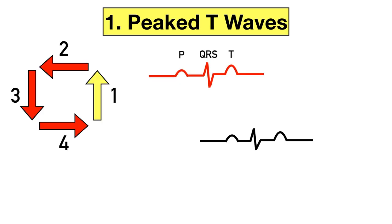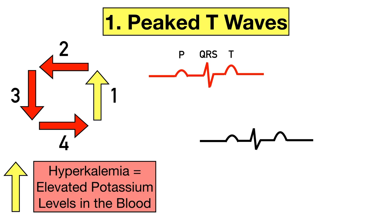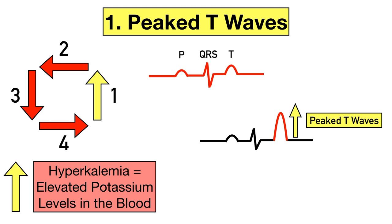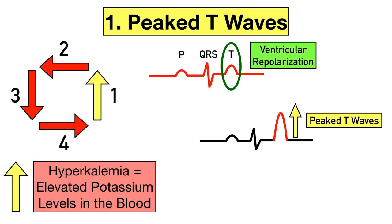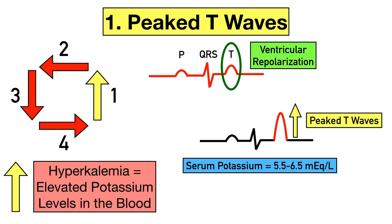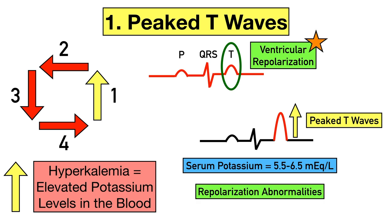The first arrow to start with is the up arrow. Since we're dealing with elevated levels of potassium, this helps you remember to start with the up arrow. One of the first EKG changes typically seen with hyperkalemia is peaked T waves — a T wave with a higher-than-normal amplitude that gives a tall, peaked, or tented appearance. Remember that the T wave represents ventricular repolarization. Peaked T waves generally occur when potassium levels are about 5.5 to 6.5, when repolarization abnormalities can occur.